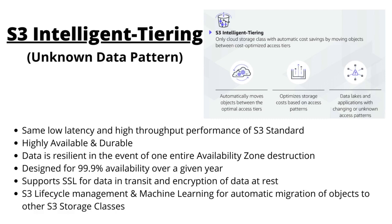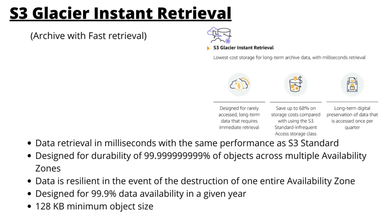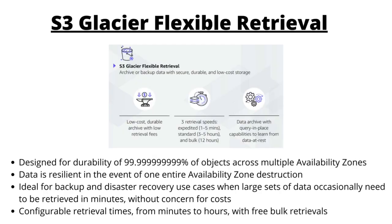The next storage class is S3 Glacier. Glacier is archival storage in S3 and comes in three different types. The first is S3 Glacier Instant Retrieval, used for long term digital preservation of data that is accessed once per quarter. When you retrieve your data you will get it instantly within seconds. The minimum object size is 128 KB, and it provides durability of 99.999999999% across multiple availability zones. The next type is S3 Glacier Flexible Retrieval, ideal for backup and disaster recovery use cases when large sets of data occasionally need to be retrieved in minutes without concern for cost.